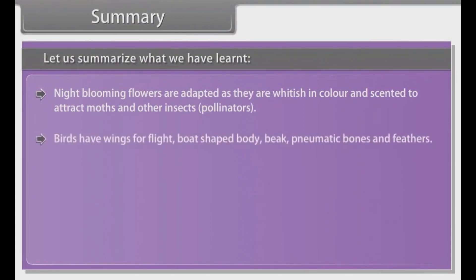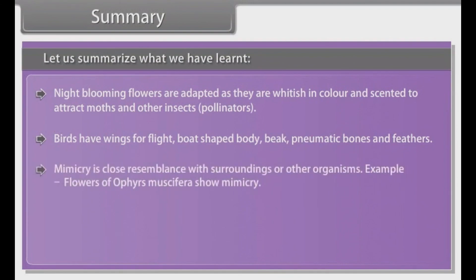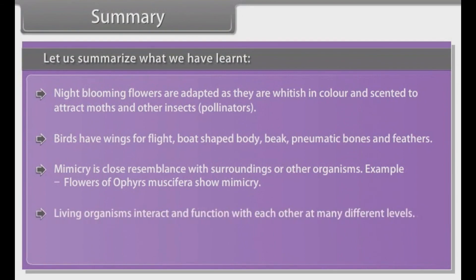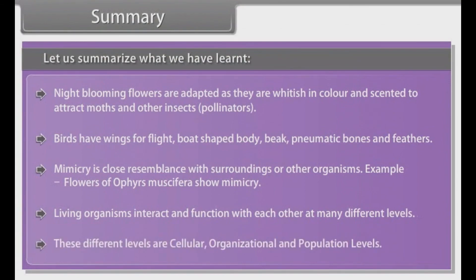Birds have wings for flight, a boat-shaped body, beak, pneumatic bones, and feathers. Mimicry is close resemblance with surroundings and other organisms — for example, flowers of Ophrys musifera show mimicry. Living organisms interact and function with each other at many different levels: cellular, organizational, and population levels.